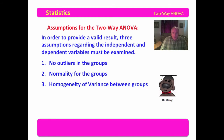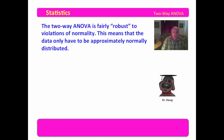No outliers means no extreme values. Normality means that each of the group variables are normally distributed. And homogeneity of variance means that the standard deviations are the same — basically, the curves are the same width.